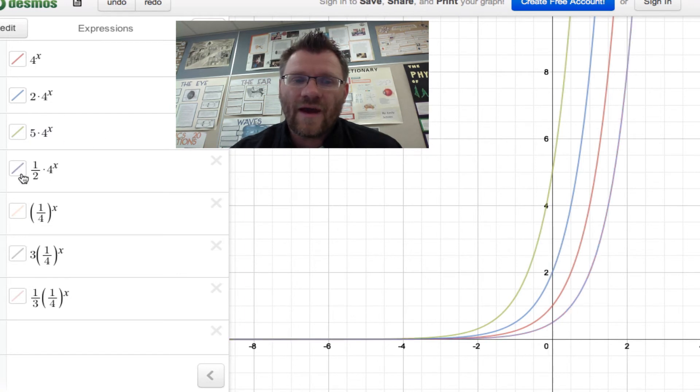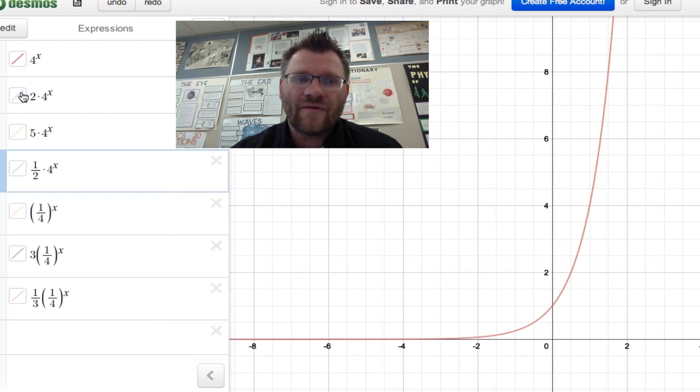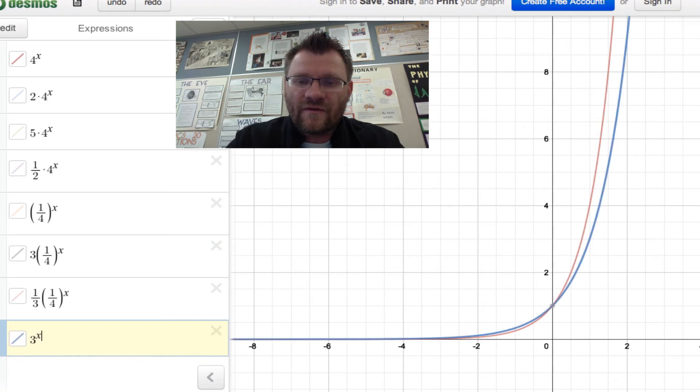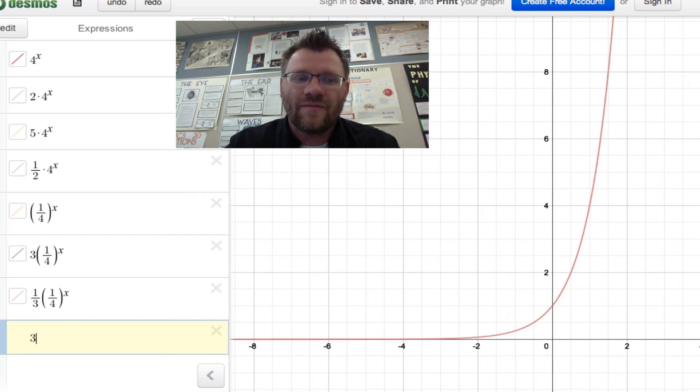If I multiply by a half, then that just happens to make my y-intercept a half instead. So what happens then if I change the base? So the base was 4 to the power of x. If I change the base to something like 3 to the power of x, it still looks like the same sort of function. It just changes the steepness of it. But what if I change that base into a fraction?